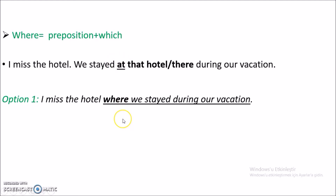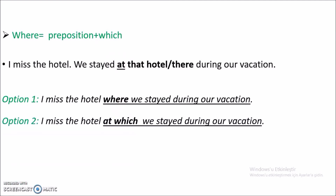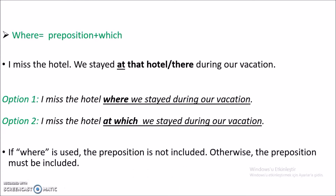So if you are using 'where', that's fine — no preposition needed. But if you are using 'which', you have to use it with a preposition so I can understand you are describing the place as a location. You keep the main clause the same — 'I missed the hotel' — and instead of 'where', you use 'at which we stayed during our vacation.' They have the same meaning with different grammar. This is the key point.